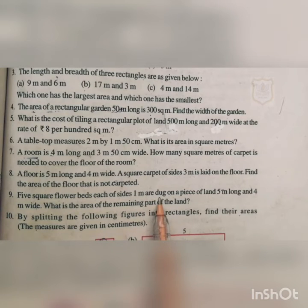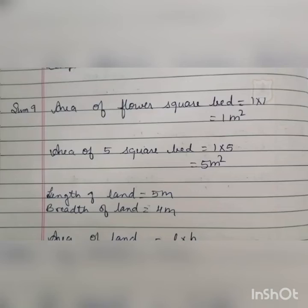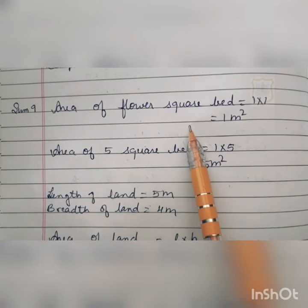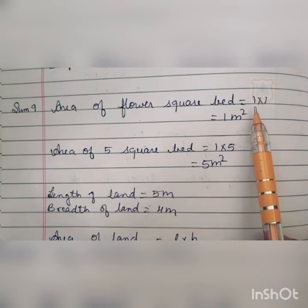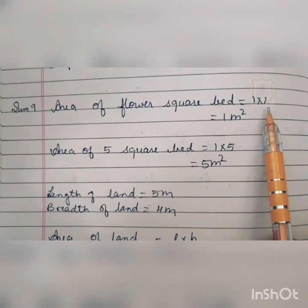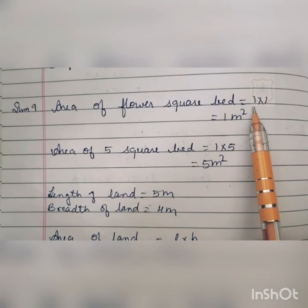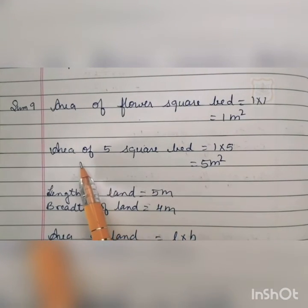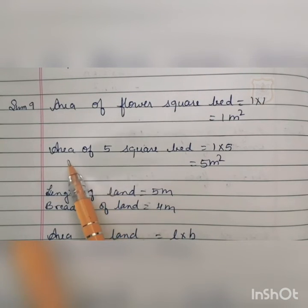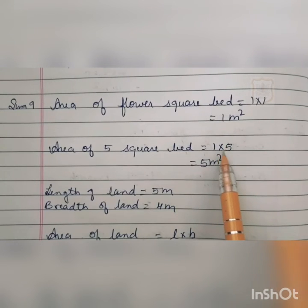Question number 9: Five square flower beds each of side 1 meter are dug on a piece of land 5 meters long and 4 meters wide. What is the area of the remaining part of the land? The area of one square flower bed is 1 × 1 = 1 square meter. The total area of 5 such beds is 1 × 5 = 5 square meters.